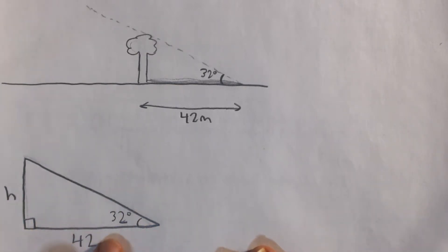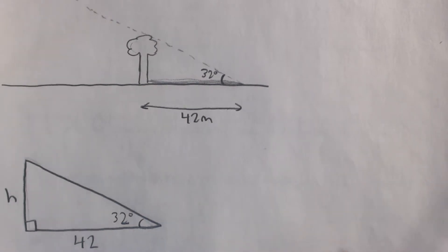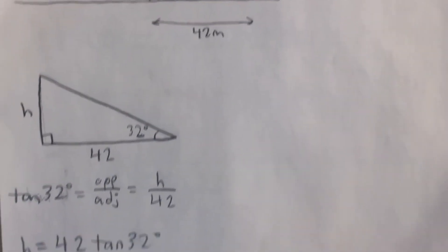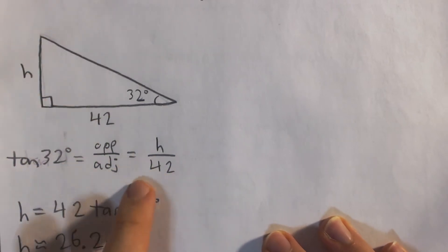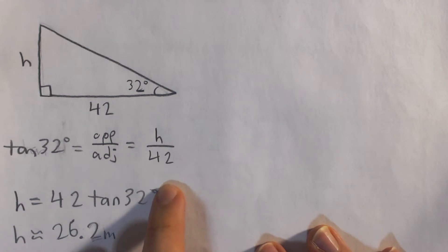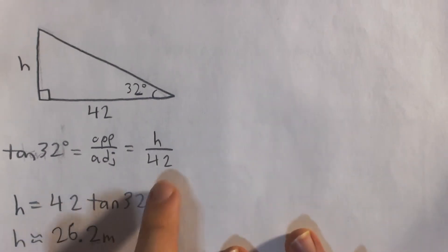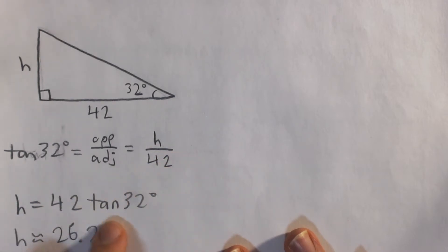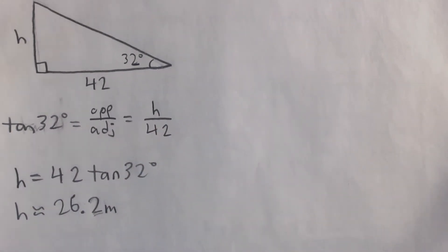We're given the opposite side to 32 degrees and we're given the adjacent side to 32 degrees, so we can relate those using the tangent ratio. Tangent of 32 degrees is equal to opposite over adjacent, which is h divided by 42. So tangent 32 equals h over 42. We multiply both sides by 42, giving us h equals 42 times tangent 32, and plugging this into our calculator we get a value of about 26.2 meters.